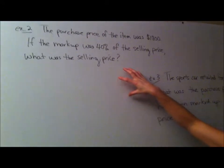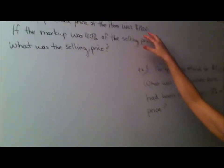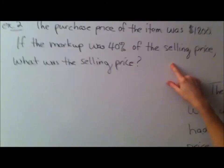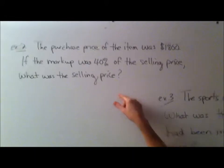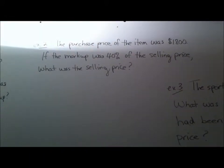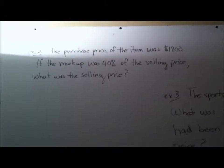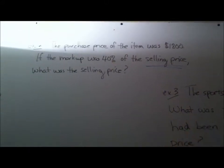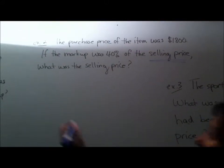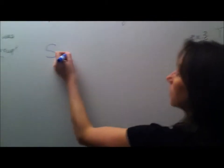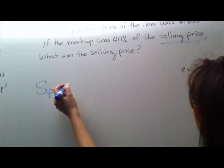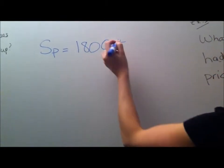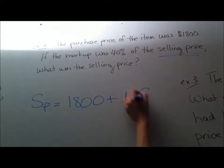Let's look at the second one. It's really dark here. The purchase price of the item was $1,800. If the markup was 40% of the selling price, what was the selling price? So now we're looking for something different. Okay, so now we use the same formula that we started with. We don't know the selling price this time. So we call that the selling price. We don't know it. Purchase price is the second thing in the formula, is $1,800. And the markup this time is 40% of the selling price.